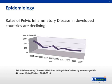The rate of PID in the United States population has gone down over the last 10 to 20 years. Most likely, this is due to the use of prophylactic antibiotics prior to surgical procedures, routine screening of high-risk populations for sexually transmitted infection, and to the use of antibiotics early in patients in which lower genital infection, such as cervicitis, is suspected.